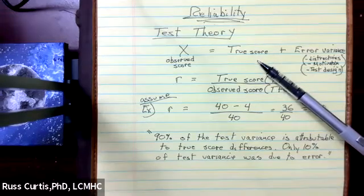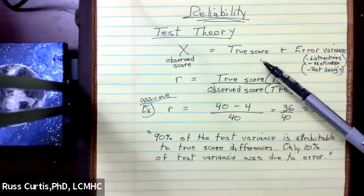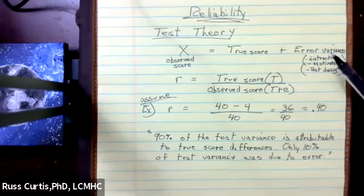There is a true score. But the observed score is the true score plus error variance.